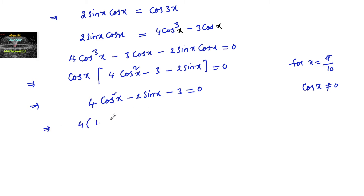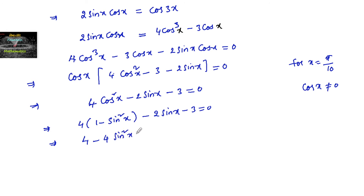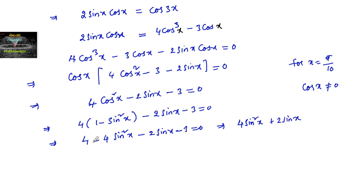Now let us substitute cos²x = 1 - sin²x. So 4(1 - sin²x) - 2 sin x - 3 = 0, which gives 4 - 4sin²x - 2 sin x - 3 = 0. Rearranging: 4sin²x + 2 sin x - 1 = 0. This is just like a quadratic equation.